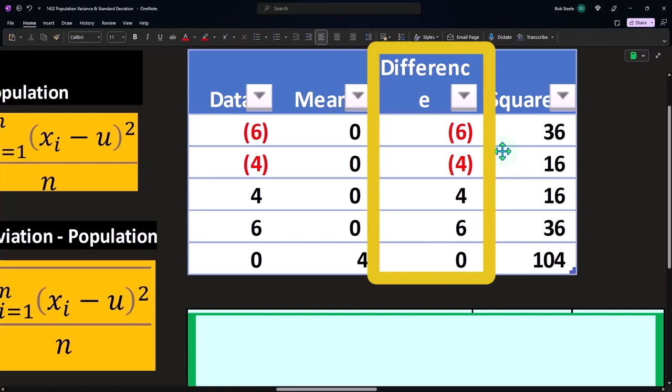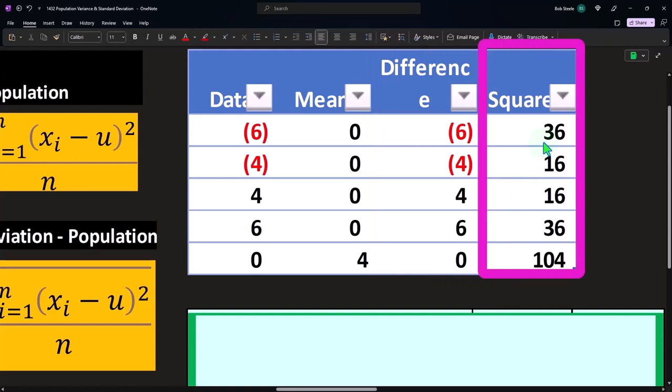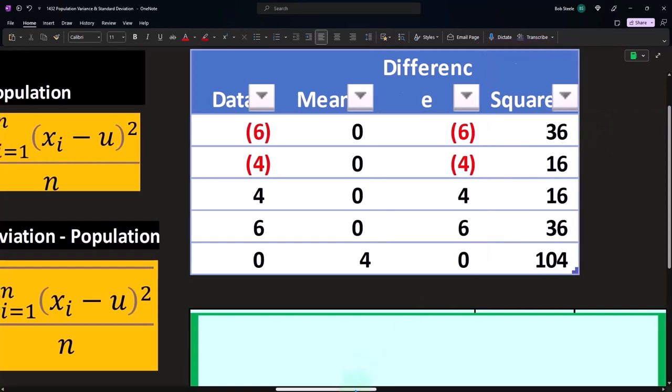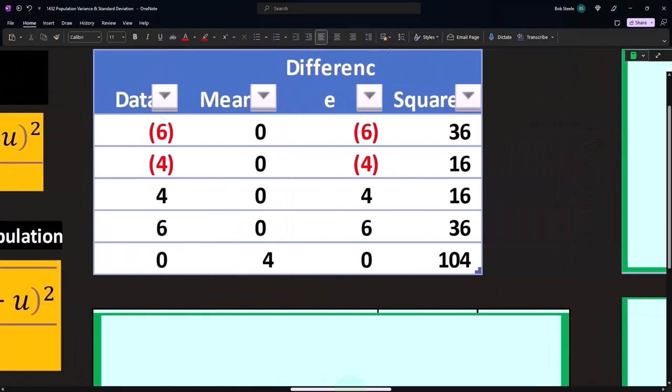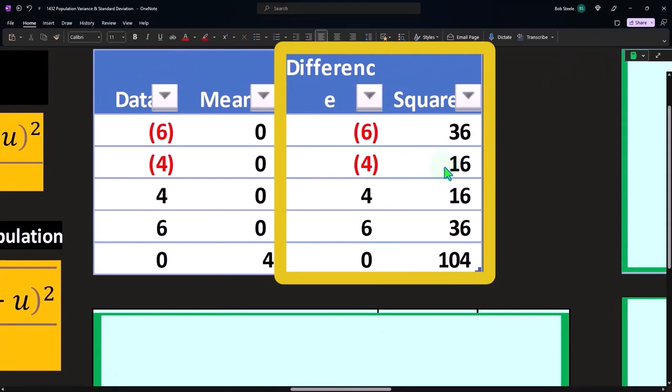The difference between what we did this time and last time is instead of taking the absolute value of these numbers, I'll square them. If I square all of them, six squared is 36. I get up to a much larger number than when I just took six and made an absolute value of six. Four squared is 16, positive four squared is 16, and positive six squared is 36. All the negatives get removed in that process.